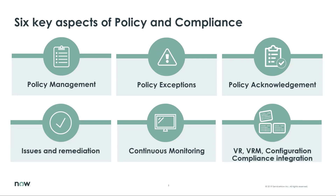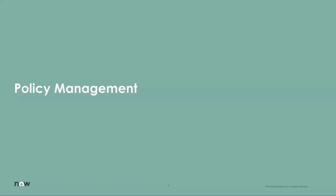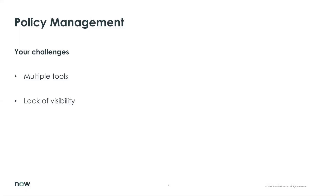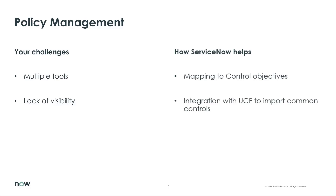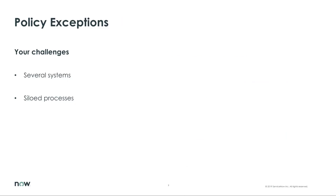Let's get into each module in more detail, starting with policy management. Organizations today manage policies and controls in tools such as Word documents and Excel, with a lack of visibility into compliance posture. ServiceNow Policy and Compliance provides the ability to create policies and map them to control objectives. Integration with UCF allows you to import authority documents such as COBIT and ISO 27001. As a compliance manager or policy owner, you can send policies through a review and approval process, track policy versions, and track compliance scores on each policy.